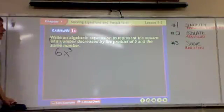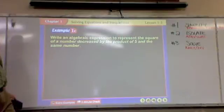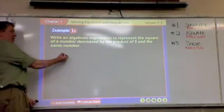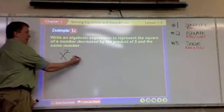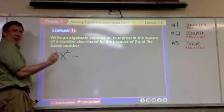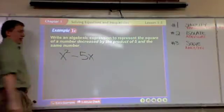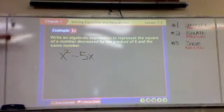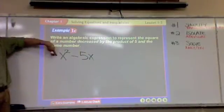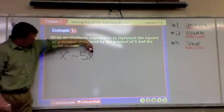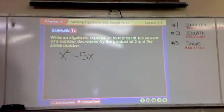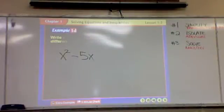The square of a number decreased by the product of five and the same number. The square of a number decreased by the product, what does product mean? Five times the same number. A number, the square of a number decreased by the product of five times the same number.